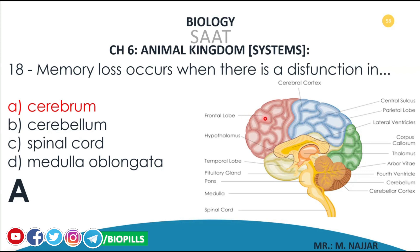The cerebrum is made up of several lobes: here we have the frontal lobe, the temporal lobe, the cerebral cortex including the frontal, the temporal, the occipital, and so on.